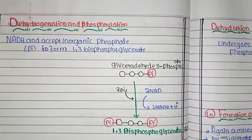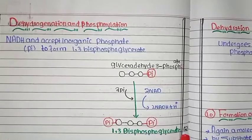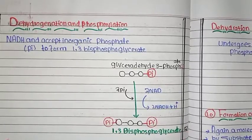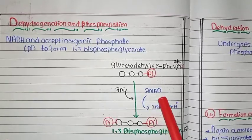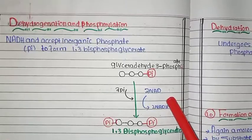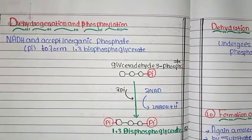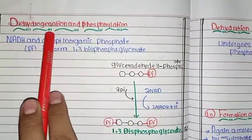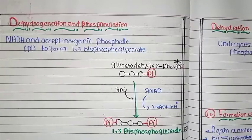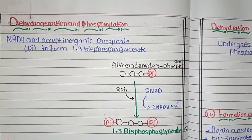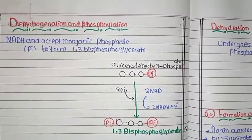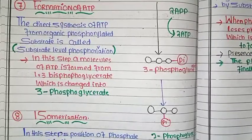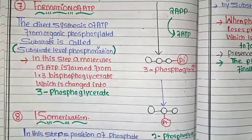The product is 1,3-bisphosphoglycerate — bisphosphate at carbon number 1 and carbon number 3. Two molecules are formed because we had two G3P molecules. Hydrogen is released in this step — this is dehydrogenation and phosphorylation together. Step 7 is formation of ATP — we have now invested energy and we will begin to get ATP back.